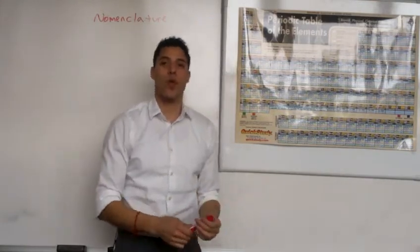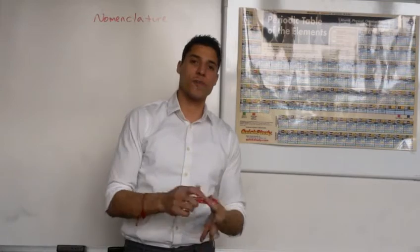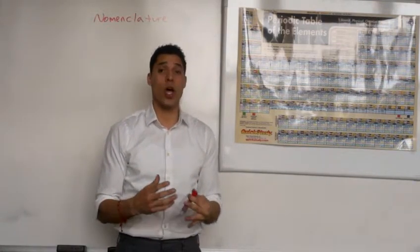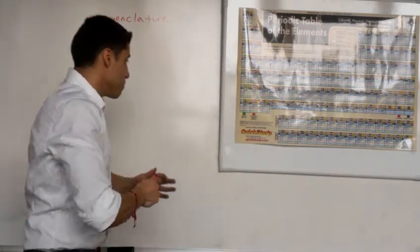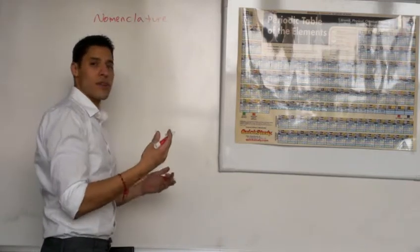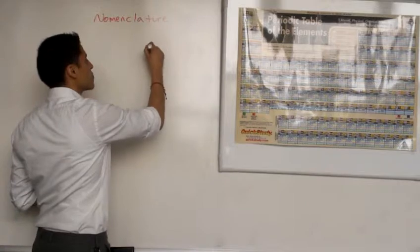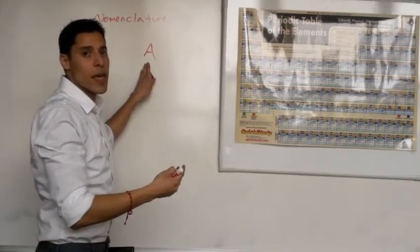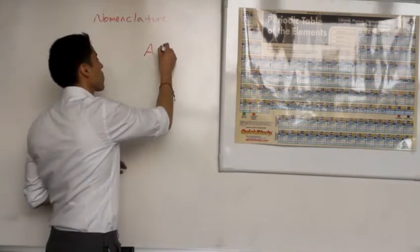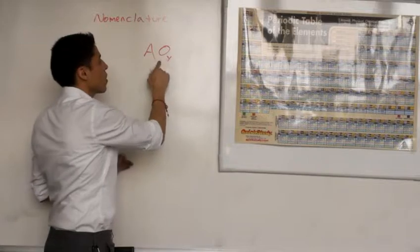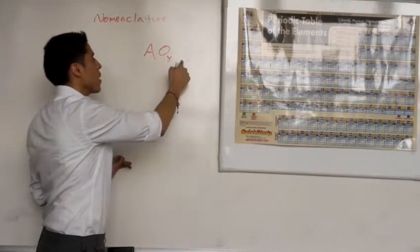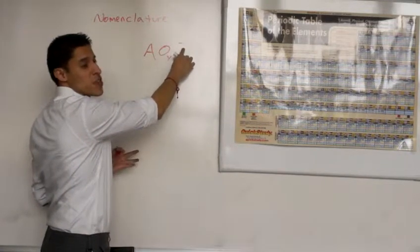Welcome to the second video on general chemistry nomenclature. In this video we're going to be going over naming oxyanions, specifically non-metal oxyanions. An oxyanion is basically an atom — in this case we're naming all non-metals — bonded to a certain amount of oxygens, with a specific charge.